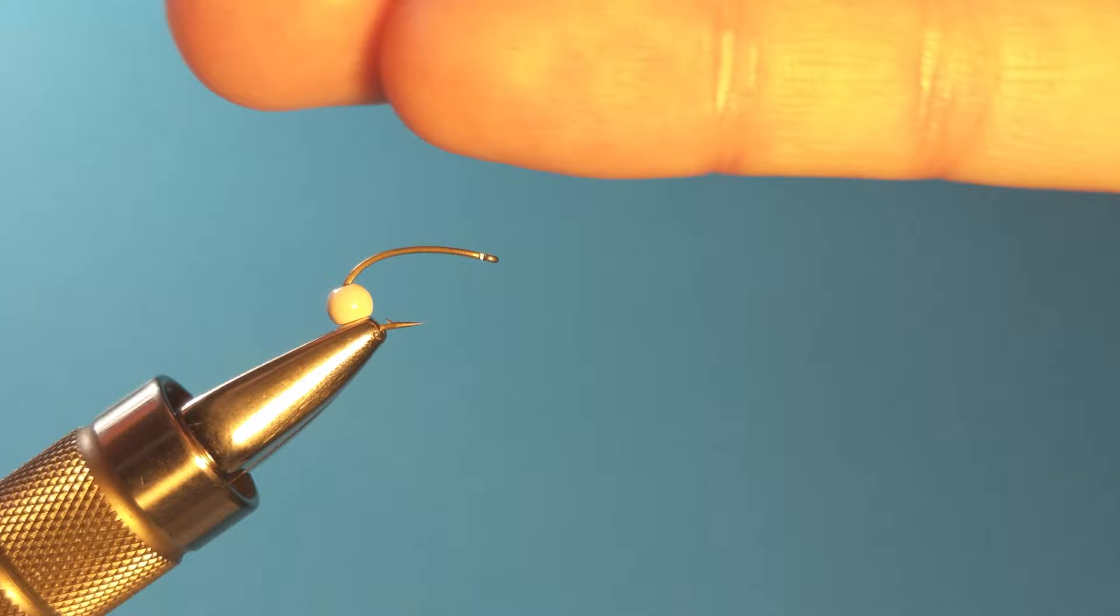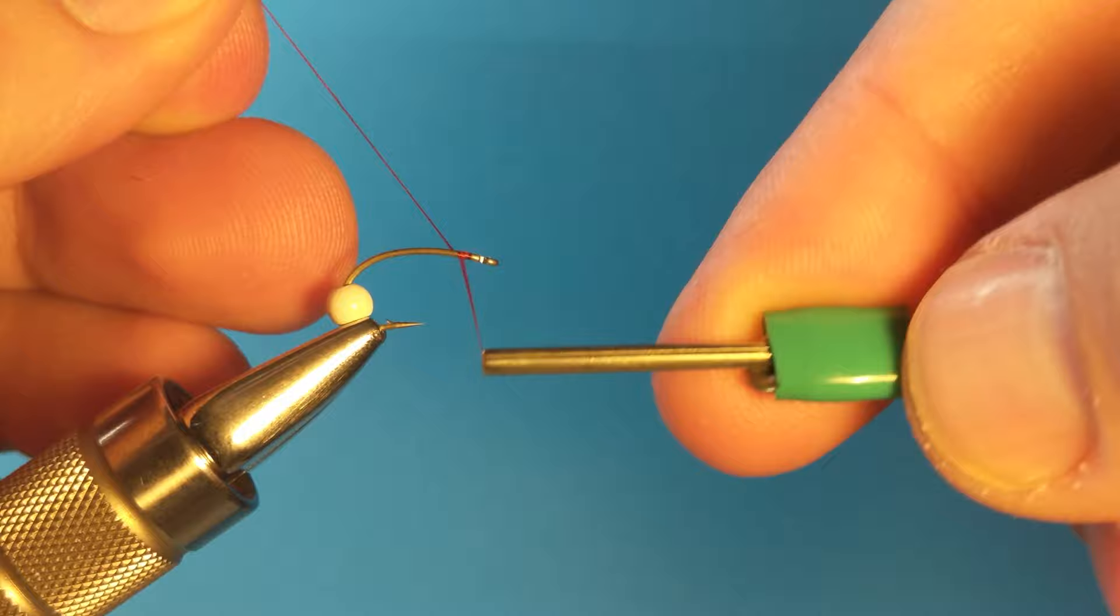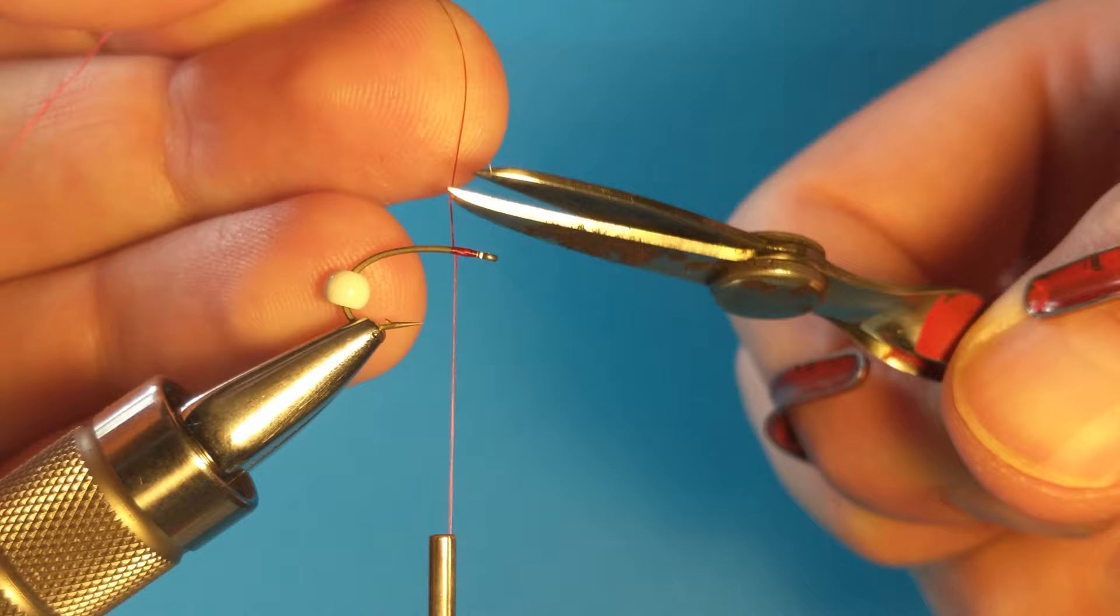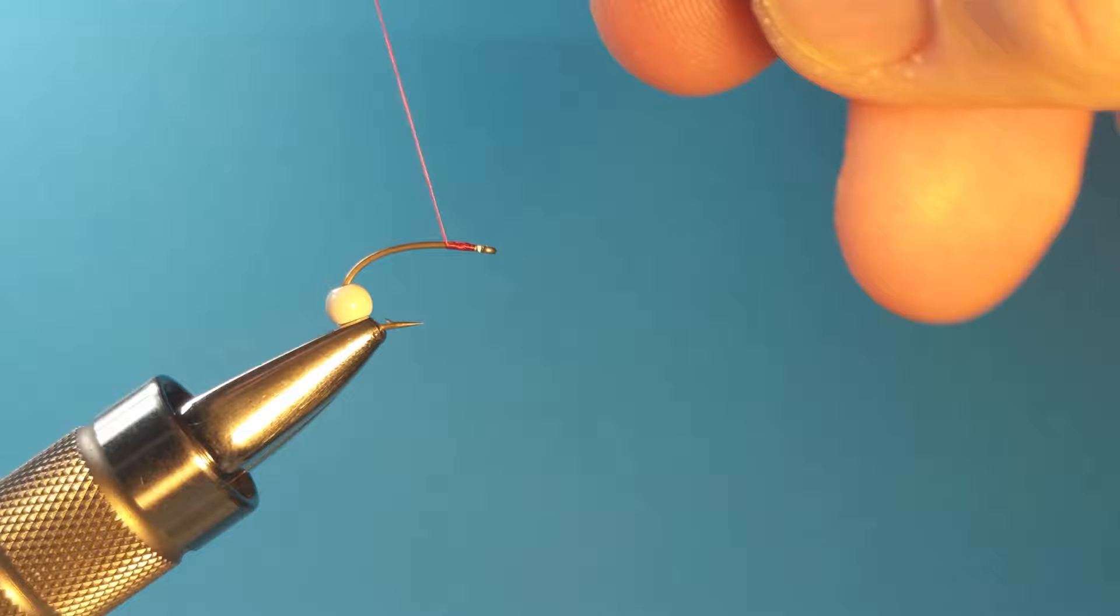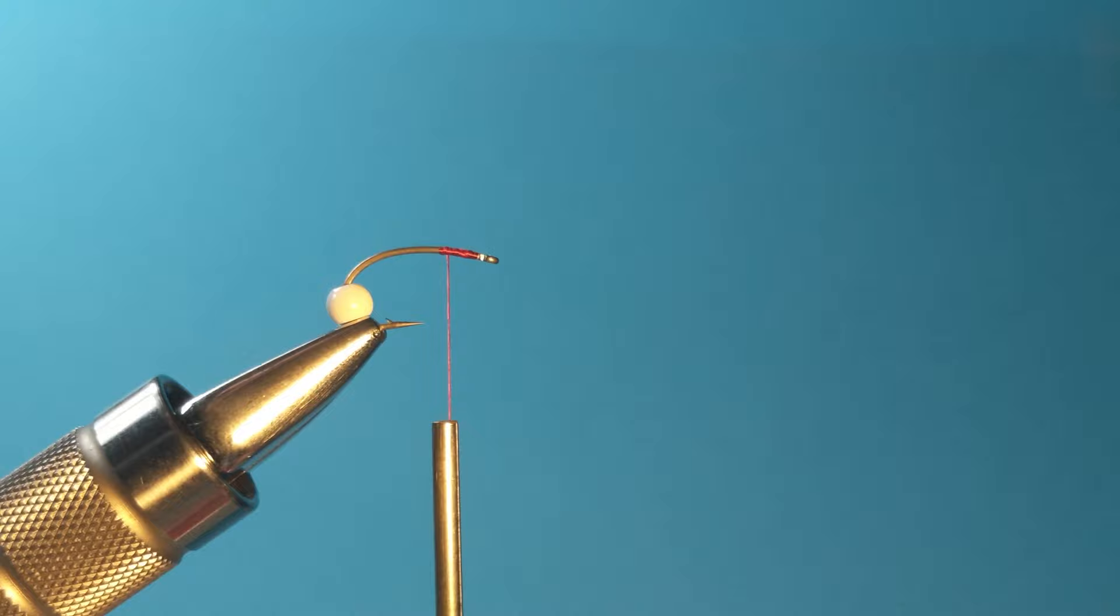So let's go ahead and take our red thread here, make a small thread base at the very top. Cut the excess. You can wrap it down a little bit maybe a quarter of the way down and then tie in the synthetic threads, the white synthetic threads here.